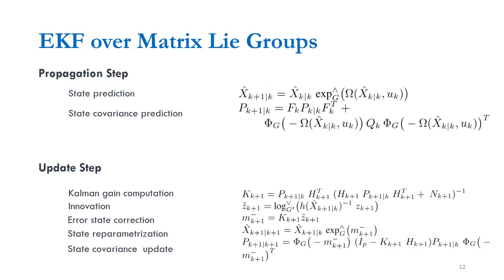Without going into the details of the equations, the general structure of the filter equations for the EKF over matrix Lie groups appears as a generalization of the standard EKF. The differences lie mainly in the computation of innovation, relevant Jacobians, and the propagation of covariance along with state reparameterization. For a more detailed explanation and references, please refer to the paper.